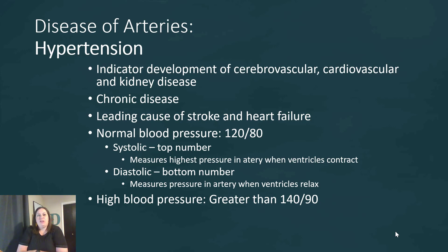In part two, we're going to look at the diseases of the arteries. One of the most common is hypertension, which is going to be the culprit for a lot of cardiovascular issues. Hypertension is an indicator for development of cerebrovascular diseases like strokes, cardiovascular diseases like heart attacks, and even some kidney diseases. High blood pressure or hypertension is a chronic disease that builds up over time, and it is the leading cause of stroke and heart failure.